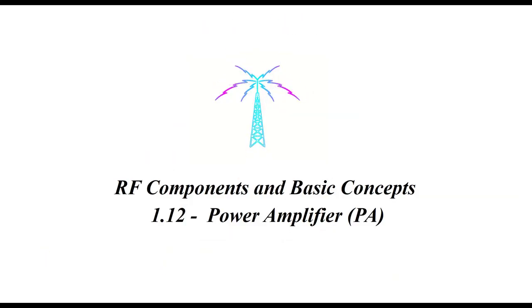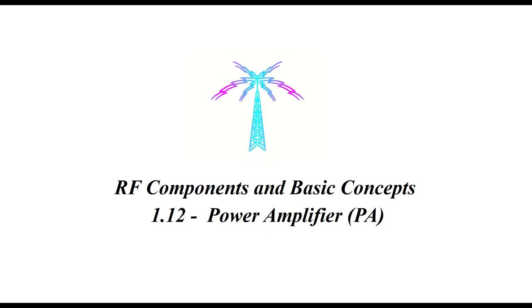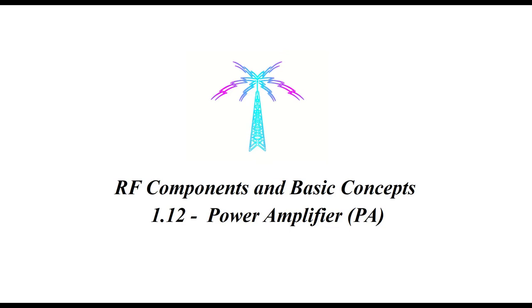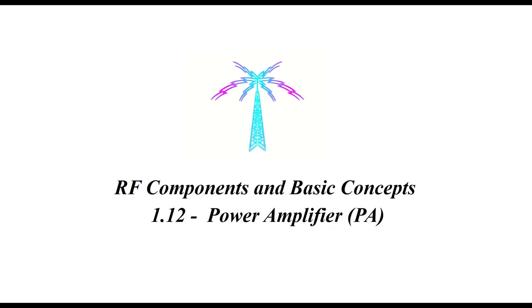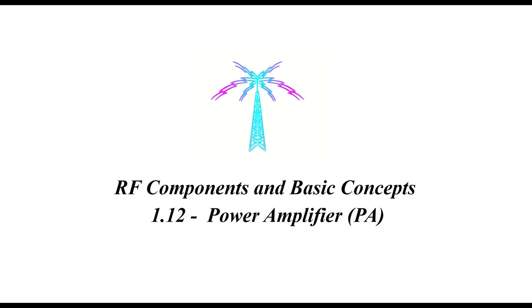The power amplifier is the last block used inside the transmitter before the antenna. As its name implies, it amplifies the power and increases the amplitude of the signal.